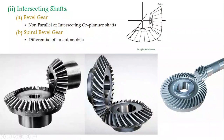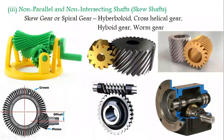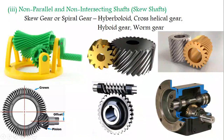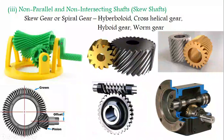Hypoid gear is similar to the spiral bevel gear, but the difference is that the pinion is not placed on the center axis of the gear — it is offset from the center axis. So the pinion axis and gear axis are non-intersecting as well as non-parallel. This is called the hypoid gear arrangement. Next is the worm gear arrangement, where the worm and gear axes are also non-intersecting and non-parallel.